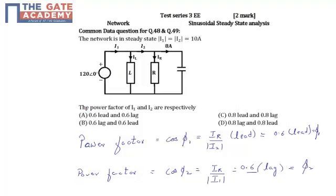In this question, we are supposed to find the power factor of i1 and i2 respectively. Option A is 0.6 lead and 0.6 lag. Option B is 0.6 lag and 0.6 lead. Option C is 0.8 lead and 0.8 lag. Option D is 0.8 lag and 0.8 lead.